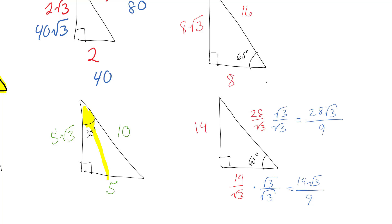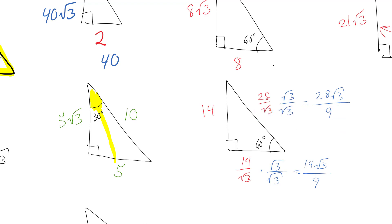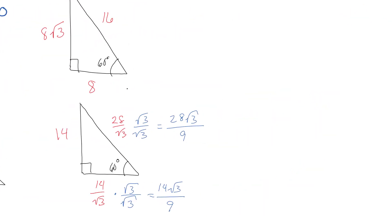A correction: √3 × √3 is not 9 — it's just 3. That's actually another reason to leave the expression as 14/√3 rather than rationalizing; you're less likely to make that kind of error.